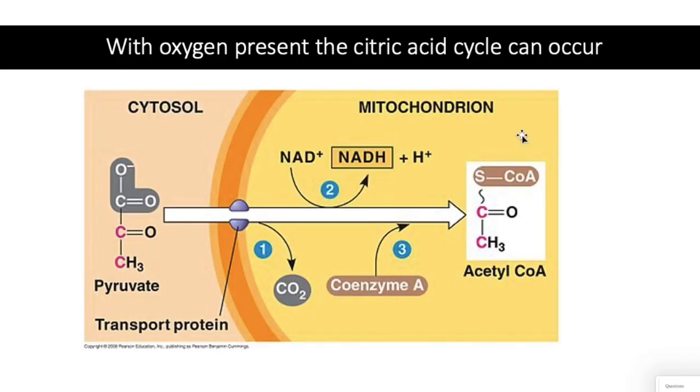When oxygen is present, the citric acid cycle can take place. This is going to be when we have pyruvate entering the mitochondria via the pyruvate dehydrogenase complex. It's going to require multiple cofactors and coenzymes to do this reaction, and we'll talk about that in a future video.